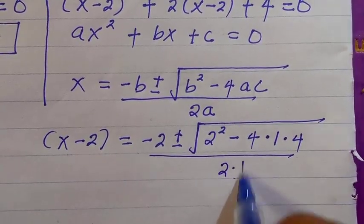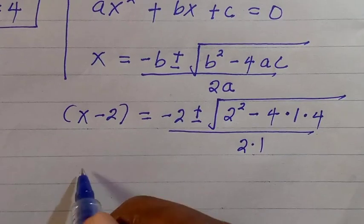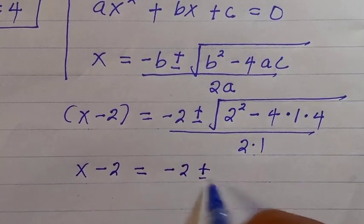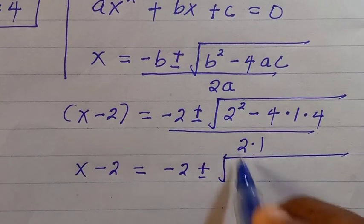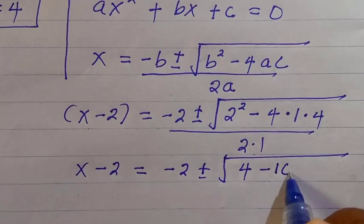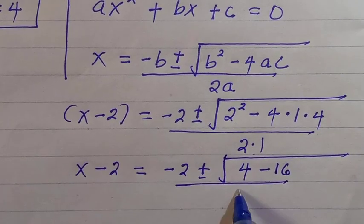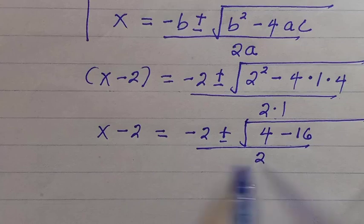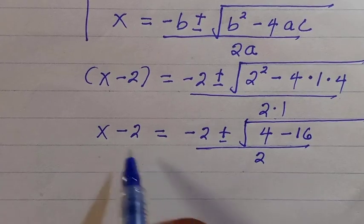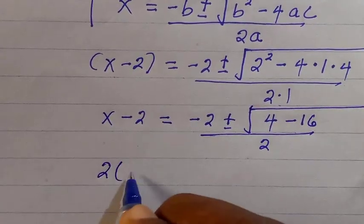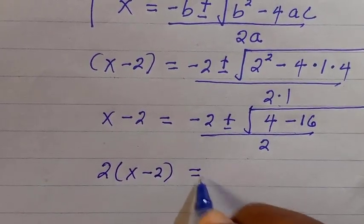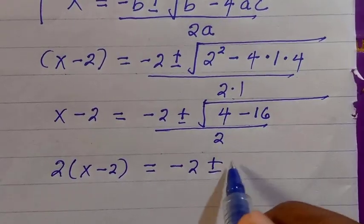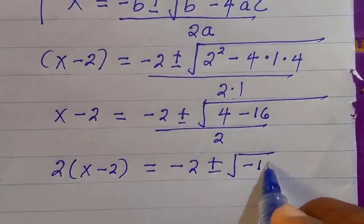That gives us x minus 2 equals minus 2 plus or minus square root of 4 minus 16, divided by 2. Cross-multiplying, 2 times x minus 2 equals minus 2 plus or minus the square root of minus 12.